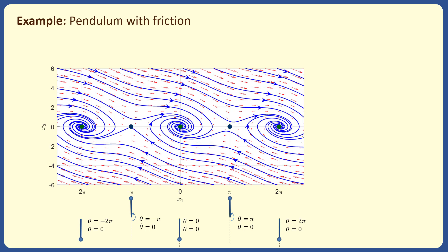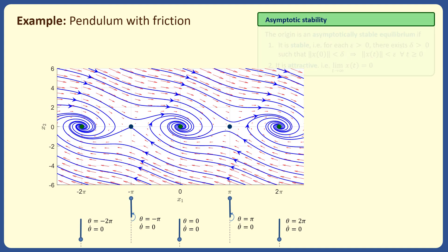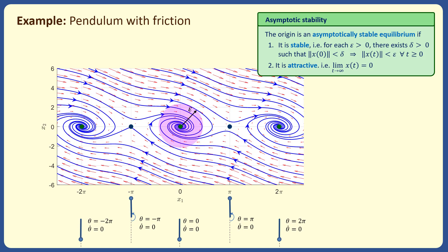Let's check the stability of the equilibrium points using the phase portrait plots and the stability definitions. The equilibrium points at x1 equals 0, minus 2-pi, and 2-pi are attractive equilibrium points, and they are also stable according to the stability definition: for any given epsilon, there exists a positive delta such that solutions starting in the green ball with radius delta stay in the purple ball with radius epsilon for all time. So these three equilibrium points are all asymptotically stable.